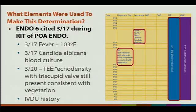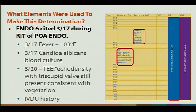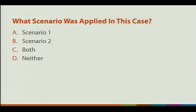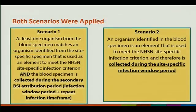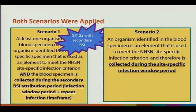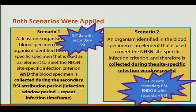In addition, endo-6 is also met on 3/17 during the RIT of the POA endo. We had fever, the 3/17 Candida albicans blood culture, and on 3/20 echo density with the tricuspid valve still present and consistent with vegetation, along with the IV drug use history. We chose endo-6 because it does not have any restrictions or limitations regarding the type of organism used — whereas endo-4 and 5 require typical endo infectious organisms. The scenario applied is C — both. Scenario 1 applies GIT IIa with a secondary BSI, and scenario 2 applies GIT IIc and endo-6, each with a secondary BSI.